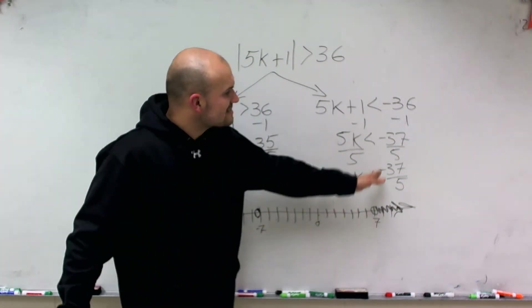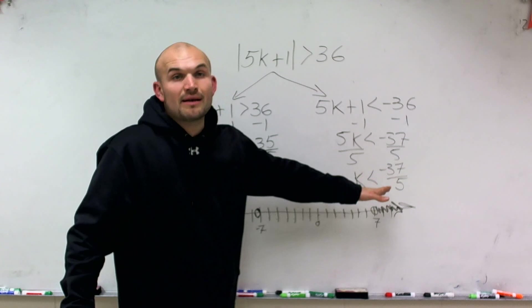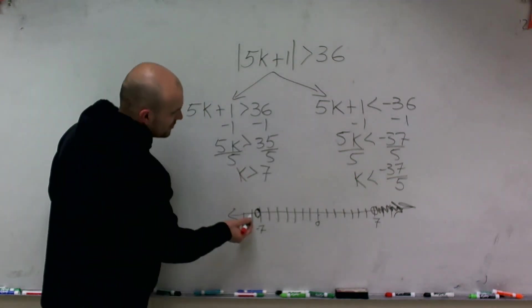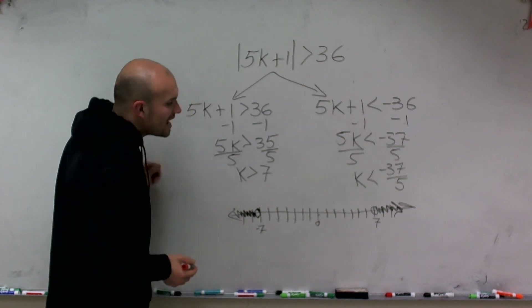Then we look at k is less than negative 37 divided by 5. So what values are smaller than negative 37 divided by 5? And that's going to be all the values to the left from here.